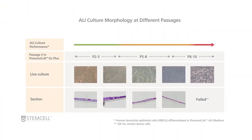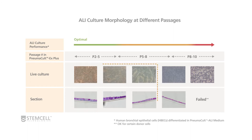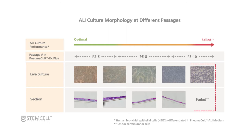ALI cultures generated using the PneumaCult culture system will display an optimal morphology in early passages, roughly P2 to P5. Good to acceptable performance is achievable in passages P5 to P8, respectively. Beyond P8, the differentiation potential declines and the ALI differentiation assay is not recommended.